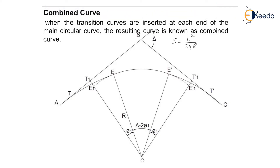Then compute the total length of tangent from the formula according to whether a cubic parabola or spiral is used, whichever curve we are using. As we know there are three types of transition curve. In a previous video we discussed about how to find out length of transition curve, so accordingly we have to find out the length of transition curve.